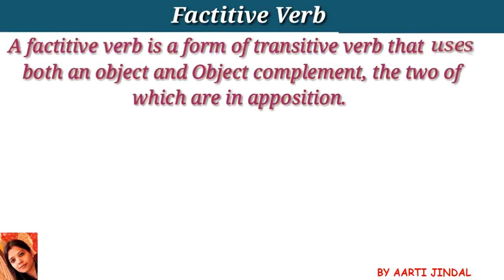First of all, we should know what a factative verb is. A factative verb is a form of transitive verb that uses both an object and an object complement, the two of which are used in apposition. Factative verb is a form of transitive verb which we use with an object and an objective complement, the two of which we keep in apposition.